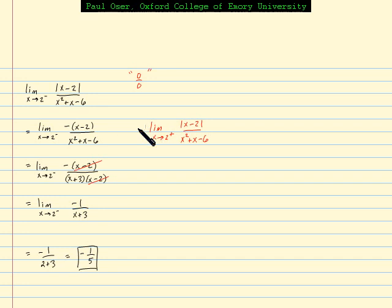Of course, from there, everything else is going to work out similarly, except for we won't have this extra negative all the way through. So the value of this limit should be positive 1 fifth.